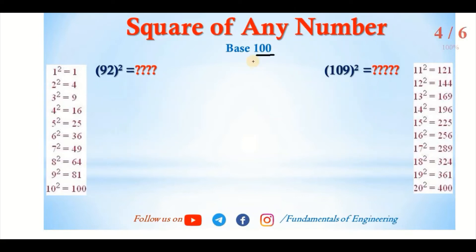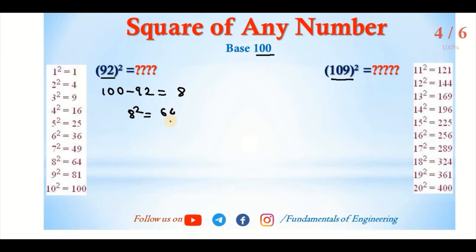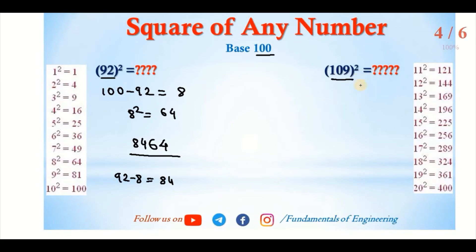Next is base 100. For numbers below or above 100, here we have 92, which is less than 100. So 100 minus 92 is 8, and 8 squared is 64 — write 64. Then 92 minus 8 is 84. So the square of 92 is 8464.